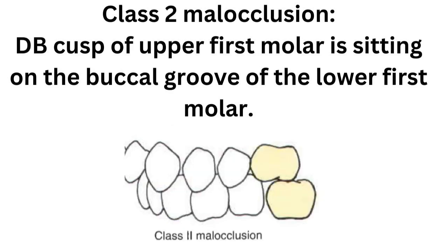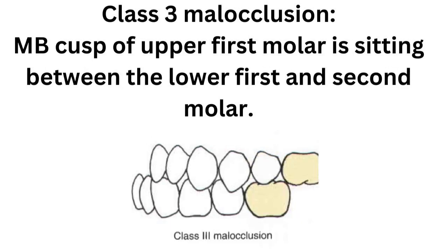Class 2 malocclusion: the distobuccal cusp of the upper first molar is sitting on the buccal groove of the lower first molar. Lastly, in class 3 malocclusion, the mesiobuccal cusp of the upper first molar is sitting between the lower first and second molar — so, in between.